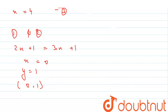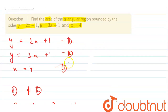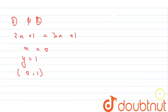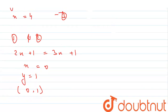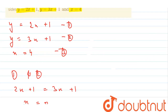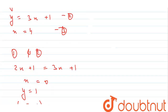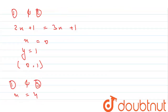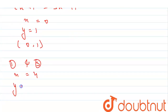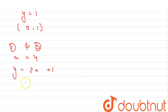Similarly, if we solve the first and third equations, we get the intersecting point of those two lines. The third equation gives x = 4, and substituting into the first equation y = 2x + 1: putting x = 4 gives y = 9. So the intersecting point of the first and third lines is (4, 9).